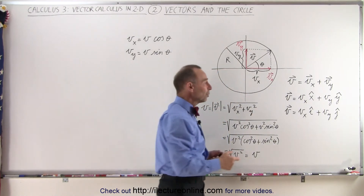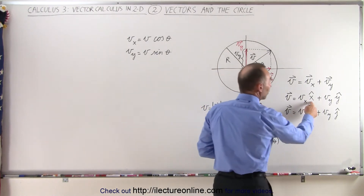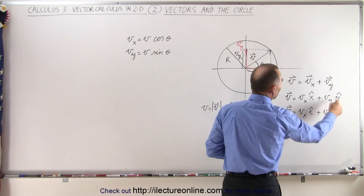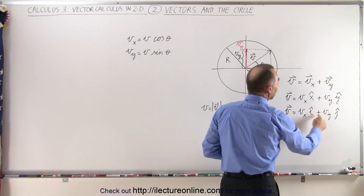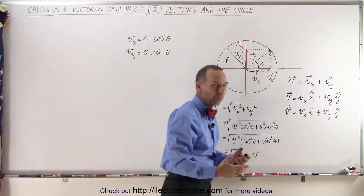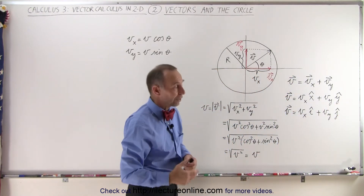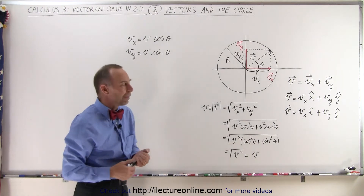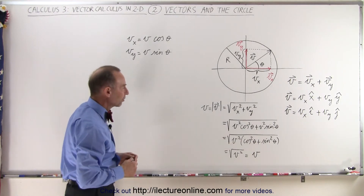If you don't like using x̂ and ŷ to represent the unit vectors in the x and y direction, you can use i and j, which are the unit vectors pointing in the x and y direction, as typically found in mathematics texts.